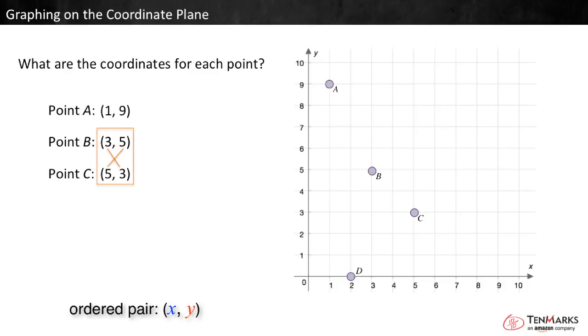Notice that B and C use the same numbers in their coordinates, five and three, but in the opposite order. That's why it's important to always write the x coordinate first. If we write it backwards, we could get our points mixed up.